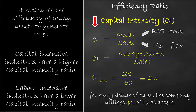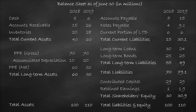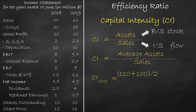Next, let's calculate the capital intensity ratio for the year 2019. Let's look at the balance sheet for the average assets in the years 2019 and 2018. We have assets of $110 million in 2019 and assets of $100 million in 2018, which gives average assets of $105 million, divided by sales in 2019 of $60 million, which is equal to $1.75 times. It means that for every dollar of sales, the company utilizes $1.75 of total assets.